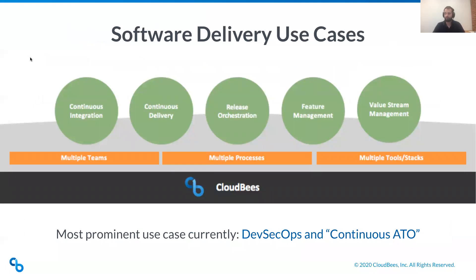Here's an idea of some software delivery use cases. You can see multiple teams — focusing on continuous integration and continuous delivery to the far left, which is the world of Jenkins and CI engines. As you move further right, you see release orchestration and continuous delivery across multiple processes and multiple teams. And on the far right is feature development — that's CloudBees Feature Flags. Each tool is specially positioned to resolve the needs across different sorts of teams using the products.